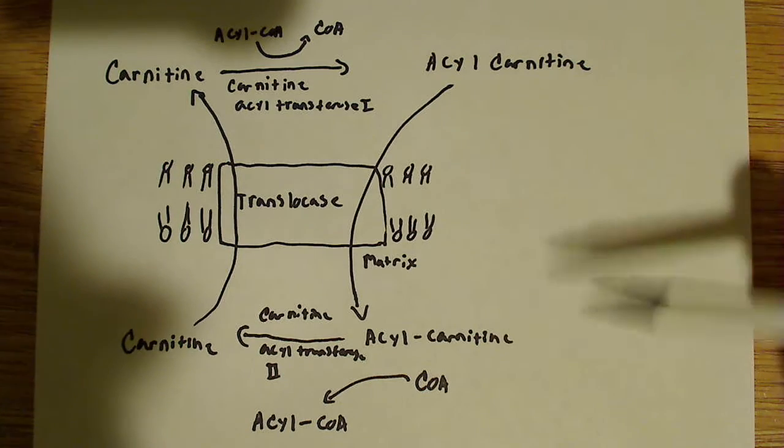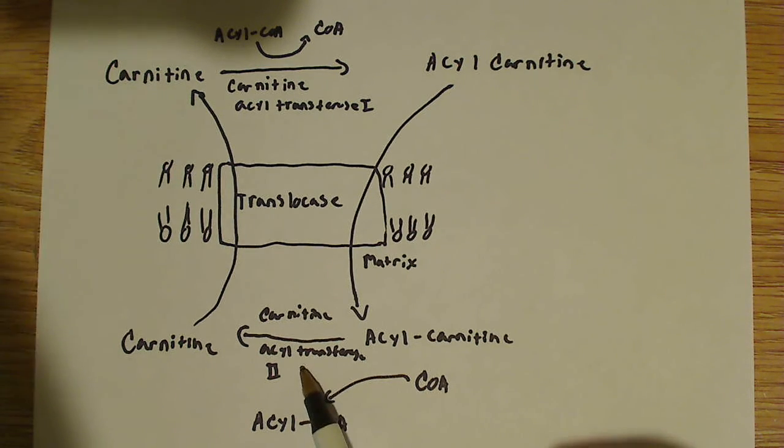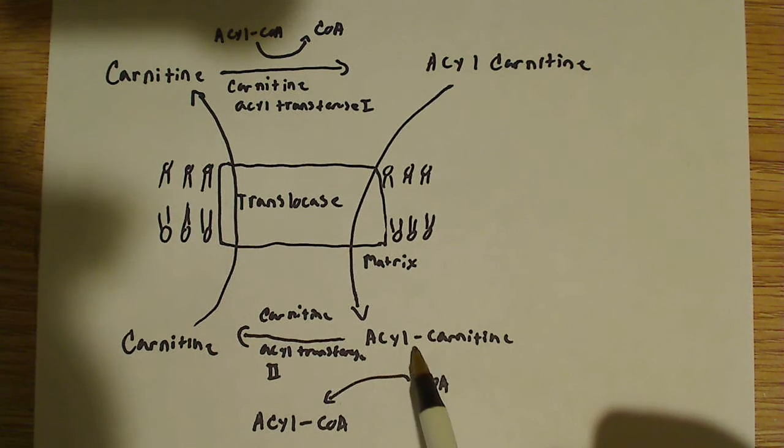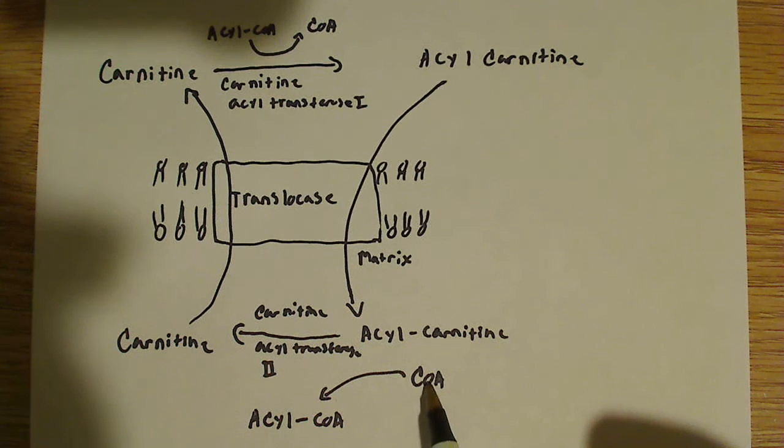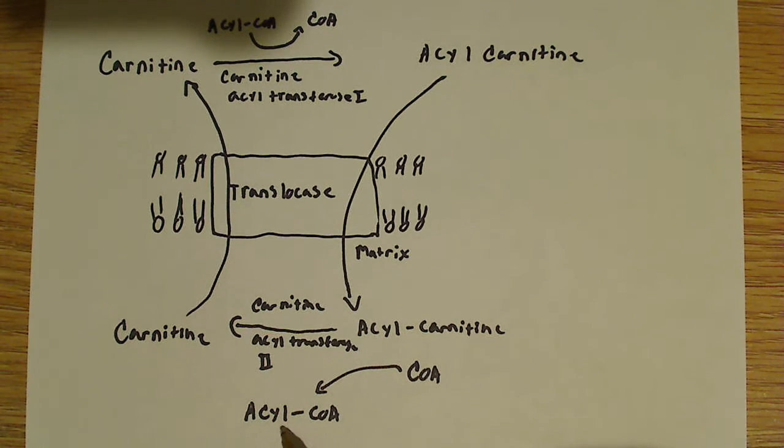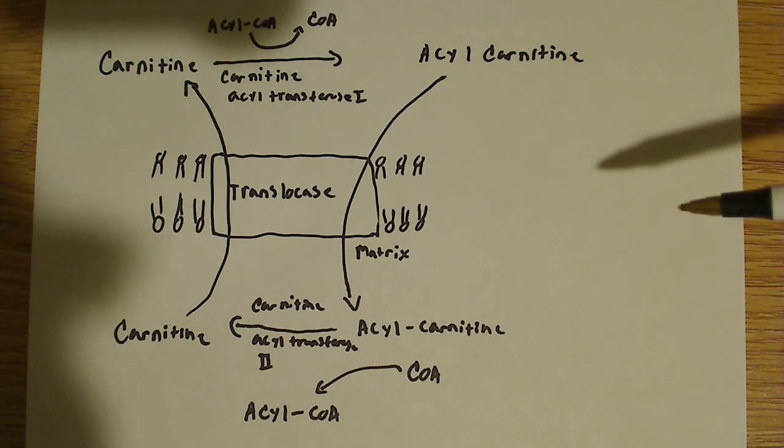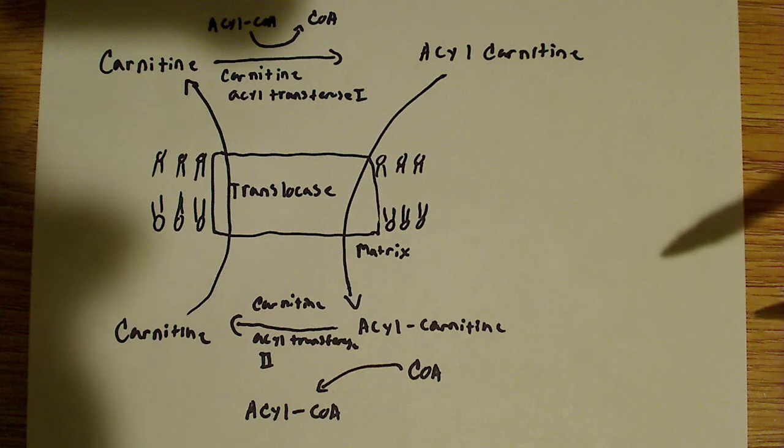And then from there, it's going to essentially go through the reverse reaction. This carnitine acyl-transferase 2 enzyme is going to catalyze the removal of carnitine here and the formation of this acyl-CoA because that's what we want. We want this acyl-CoA here because that's what's going to be used in the beta-oxidation process. So essentially there's coenzyme A in here and that's just going to be put back on to the acyl group.